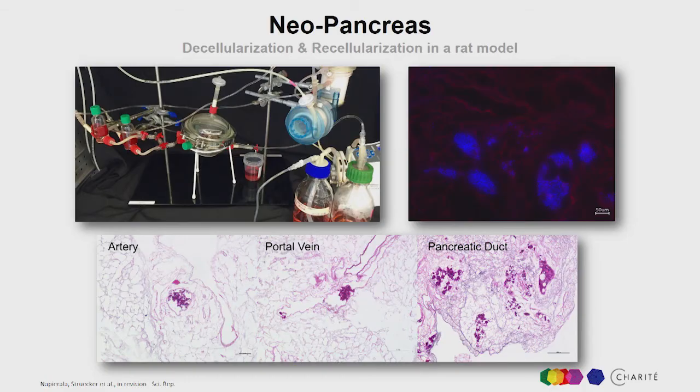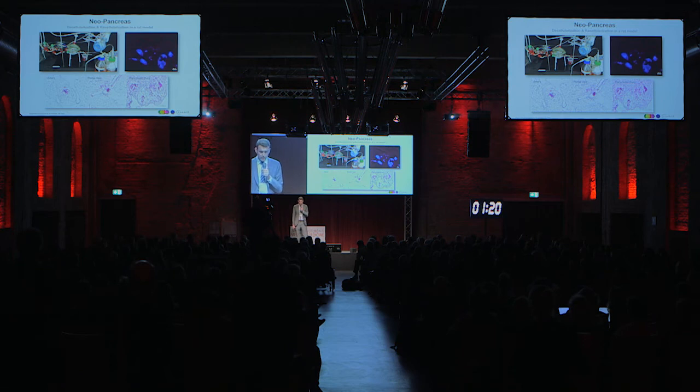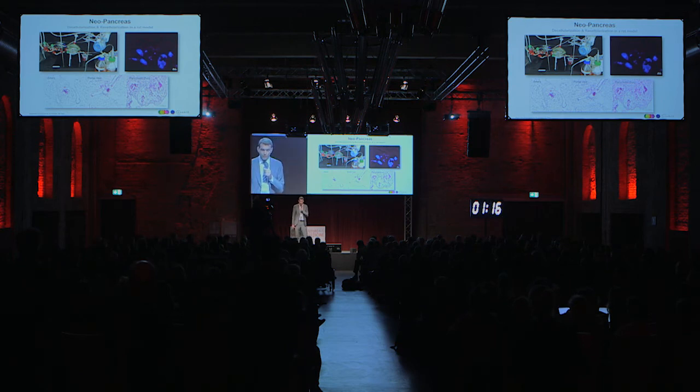Here are some of our first results from the small animal model. We constructed a bioreactor for the ex vivo perfusion of rat pancreata. We used this setting to decellularize rat pancreata, isolated islets from different animals, and repopulated those matrices with those islets. As you can see in the TUNEL staining, those islets are viable and functional after the process.